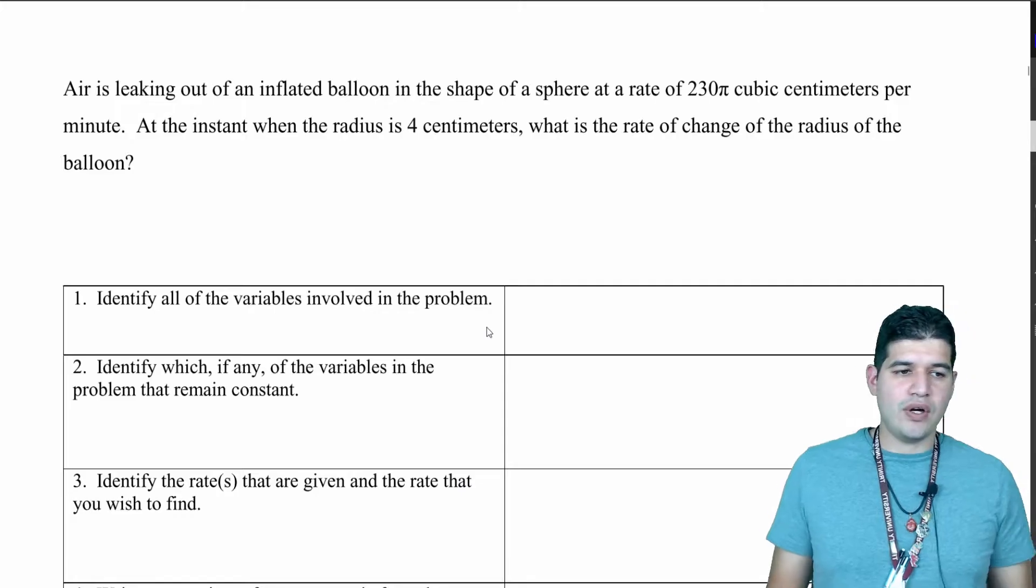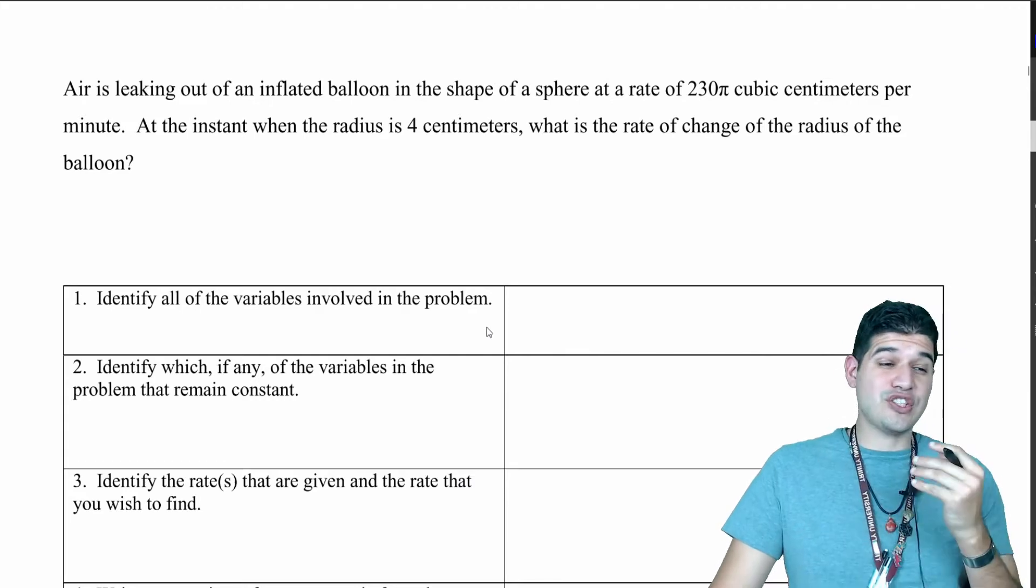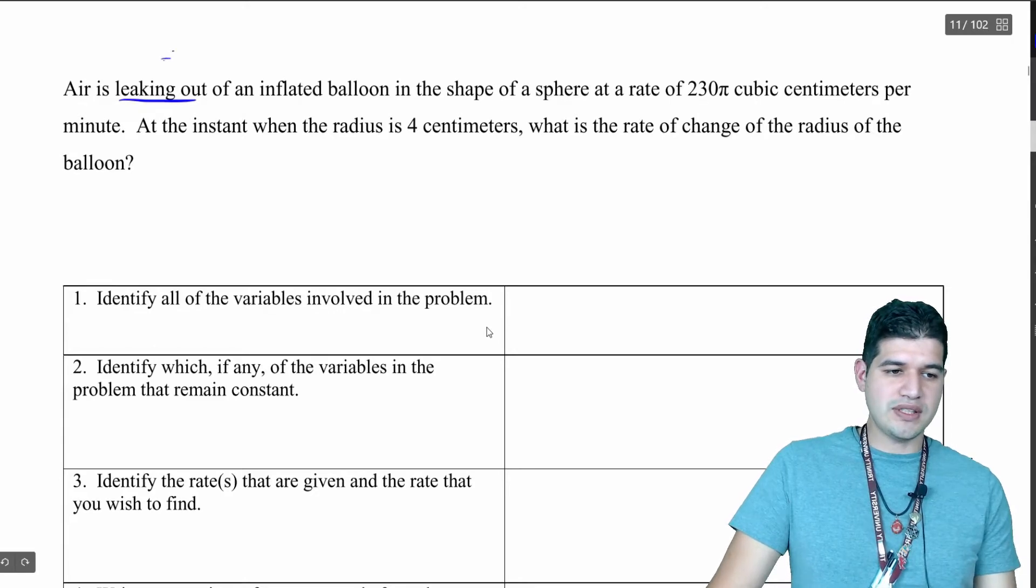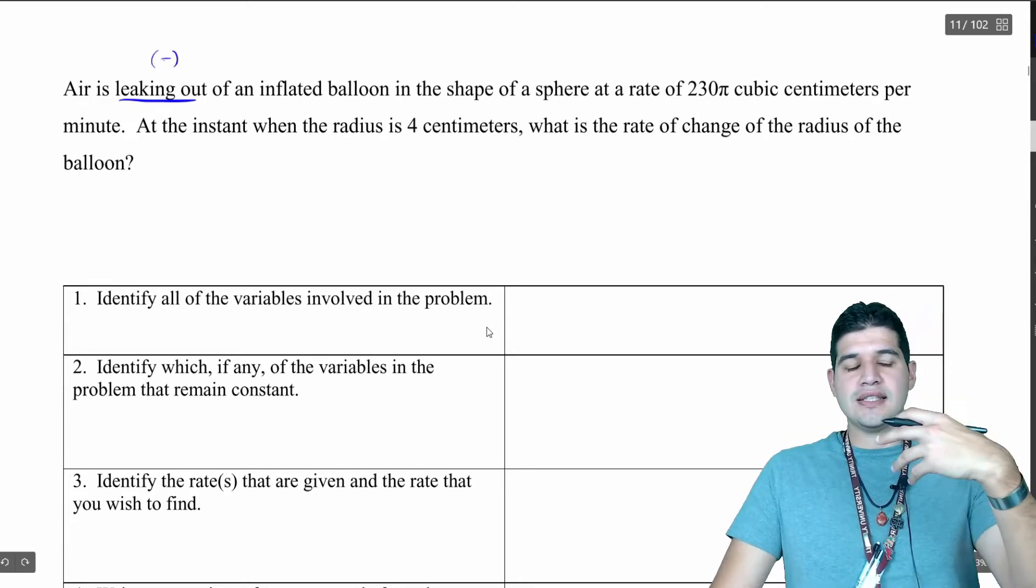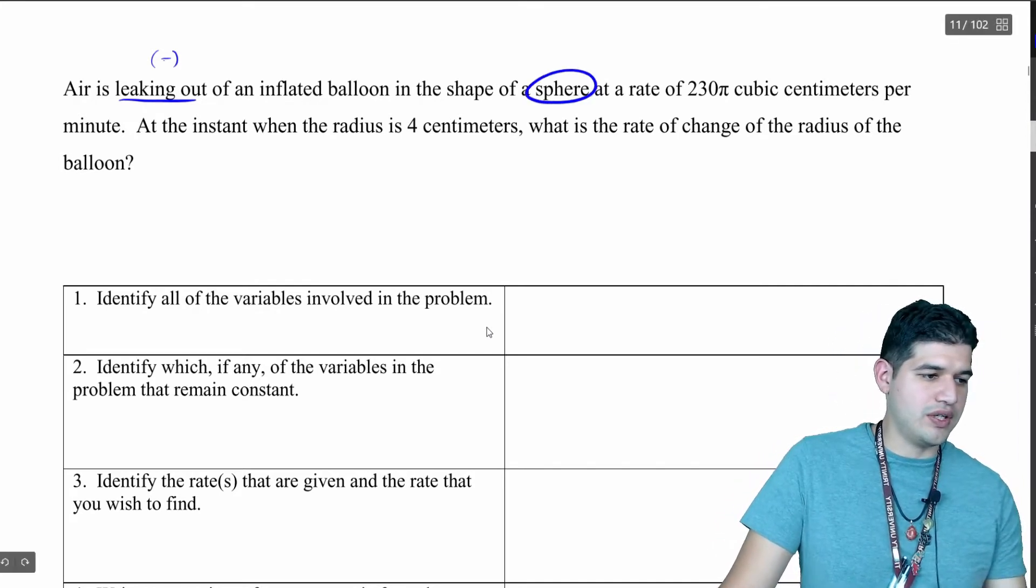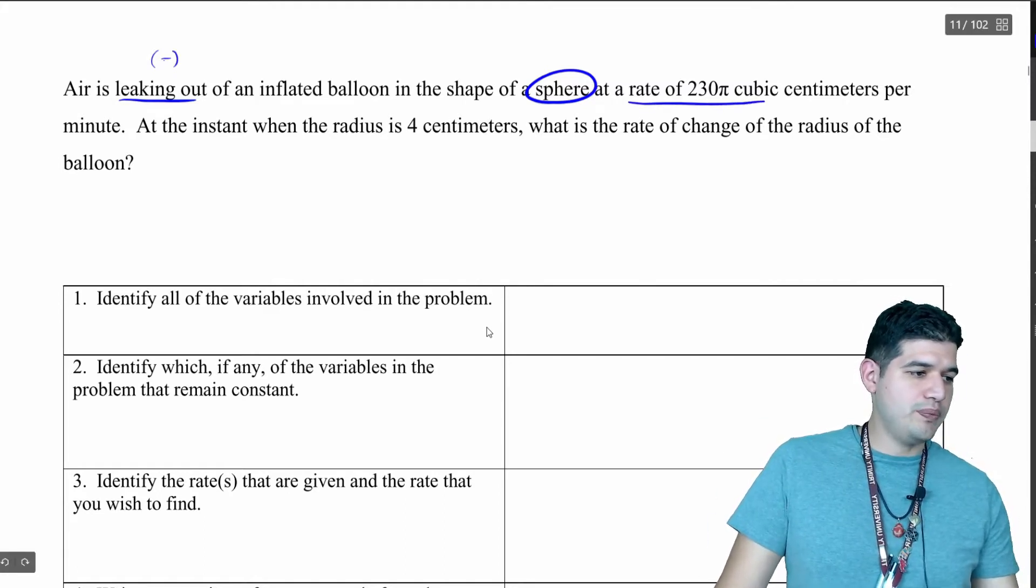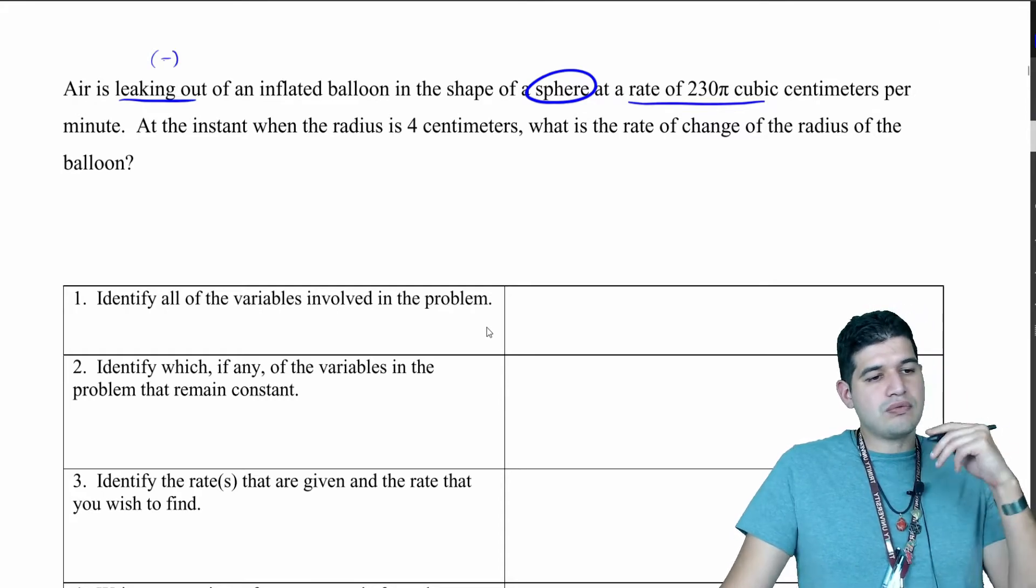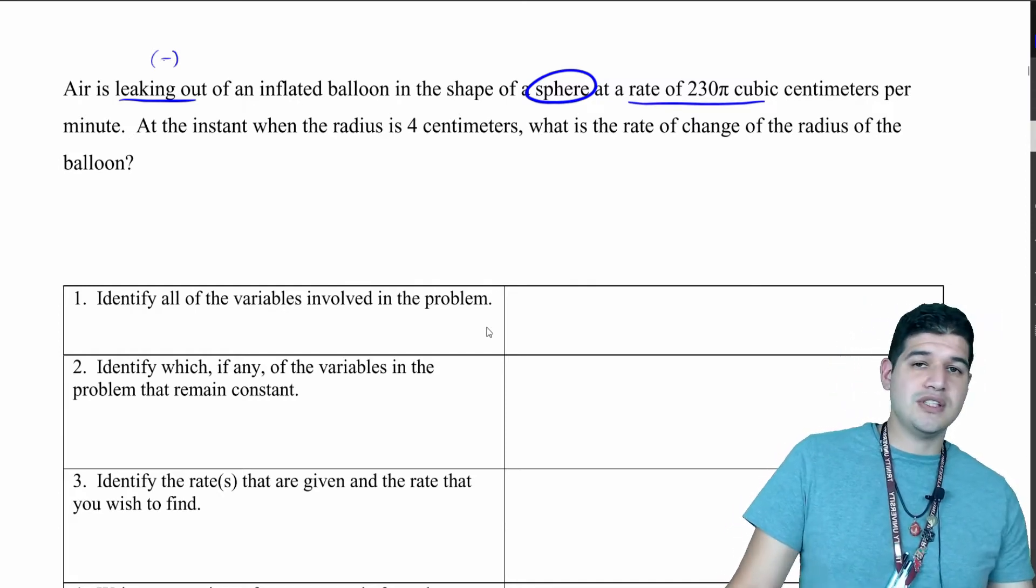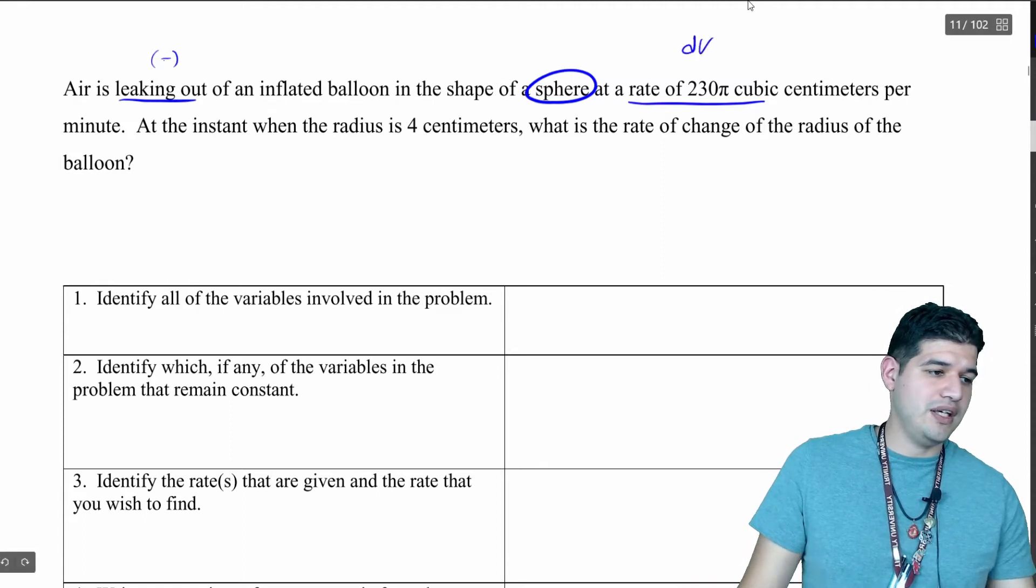We're given here air is leaking out of an inflated balloon. As I read this, I'm going to note things that are important. We know things are leaking out, so that's going to be negative because something is decreasing. We know it's in the shape of a sphere, and the rate is 230 pi cubic centimeters per minute. Since it's cubic centimeters per minute, that is the change in volume, so I'm going to write dV/dt.